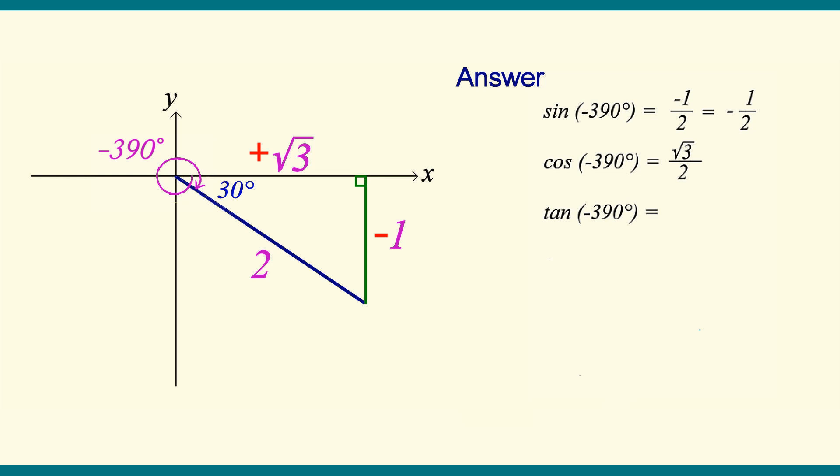Tangent is either the sine over the cosine or we could use opposite over adjacent. That gives negative 1 over square root 3. Flip the tangent over, we get the cotangent. That's negative square root 3.